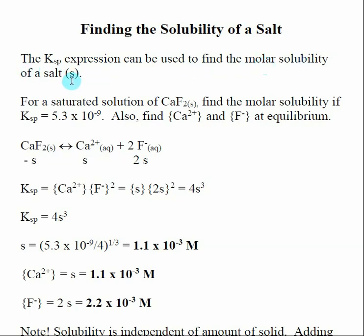This is very similar to the X value we were looking at in finding concentrations of acids and bases, but we call it S because we are dealing with an insoluble salt. Talking about the solubility of a salt is kind of difficult and hard to compare one salt to another. What we want to find is the molar solubility S, and once we find it, we can find the concentrations of the ions in solution.